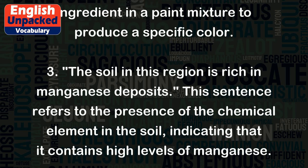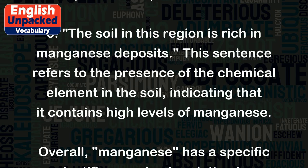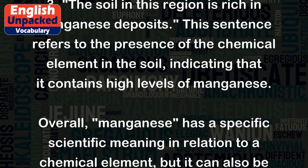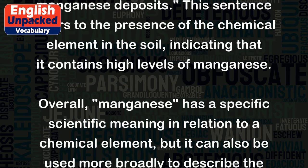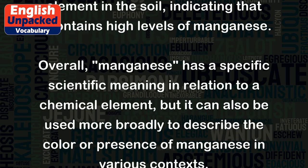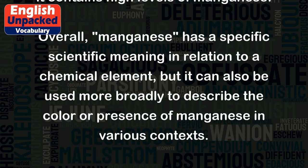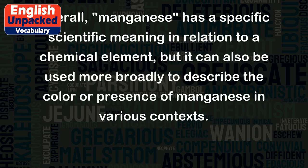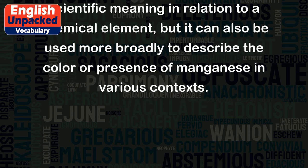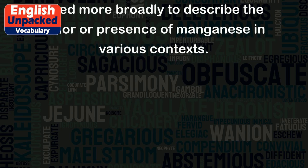3. The soil in this region is rich in manganese deposits. This sentence refers to the presence of the chemical element in the soil, indicating that it contains high levels of manganese. Overall, manganese has a specific scientific meaning in relation to a chemical element, but it can also be used more broadly to describe the color or presence of manganese in various contexts.